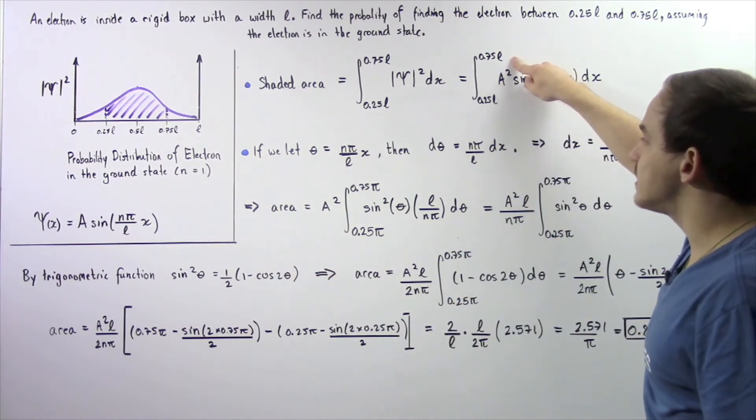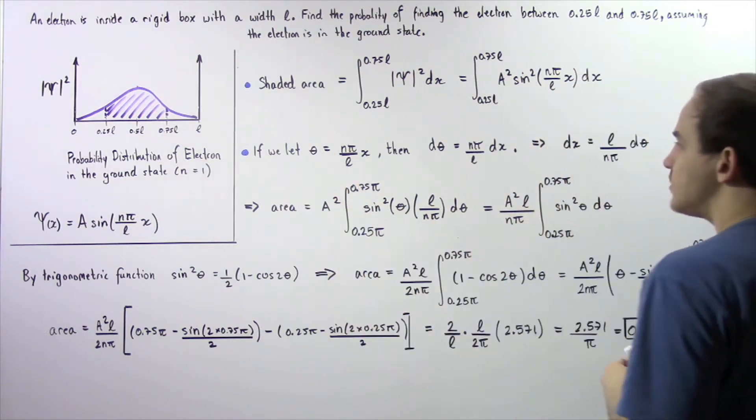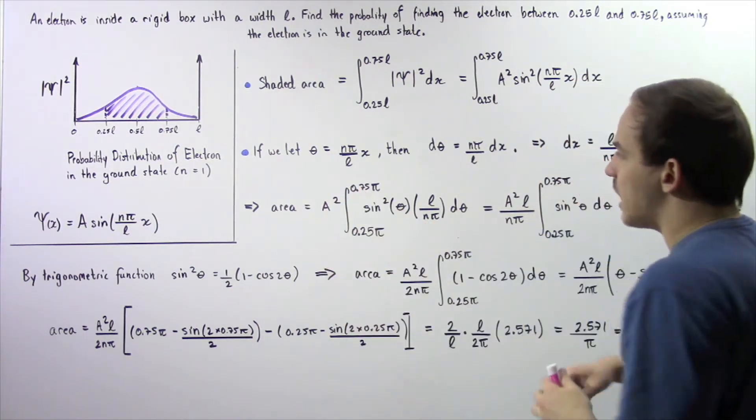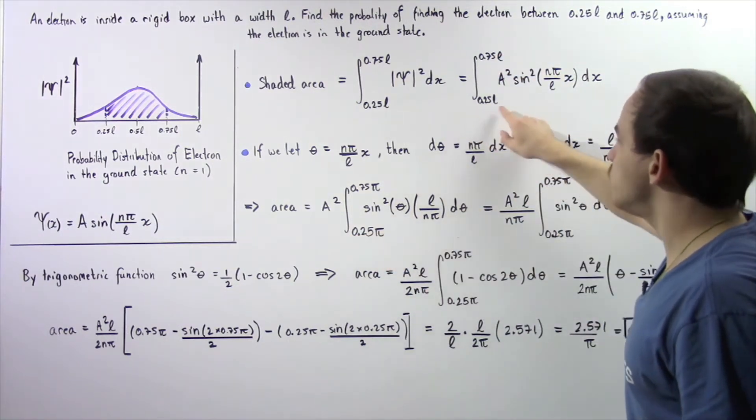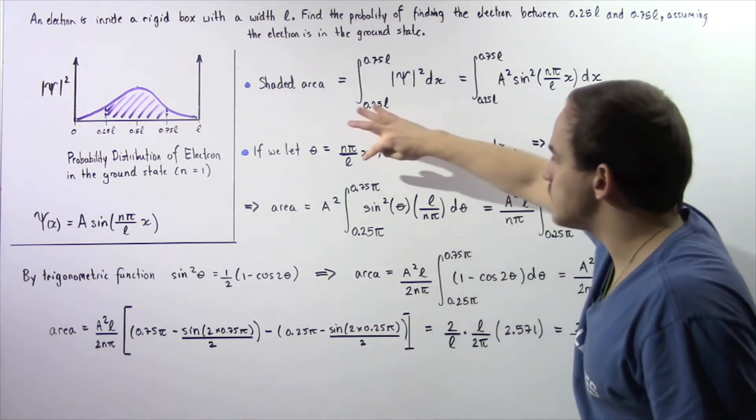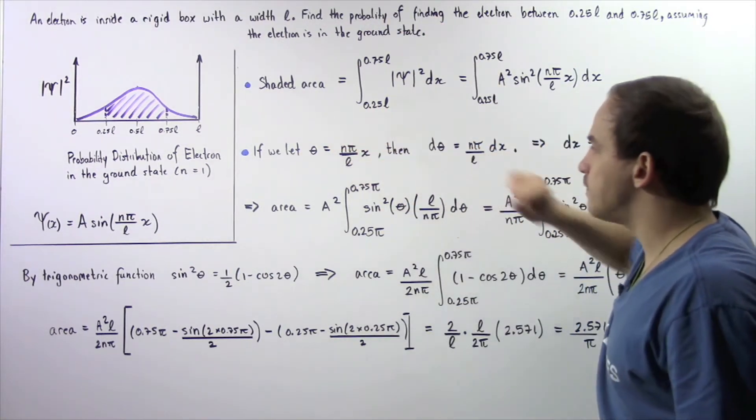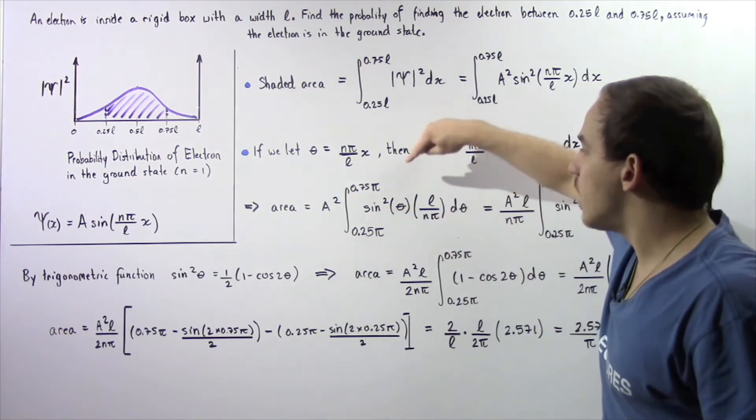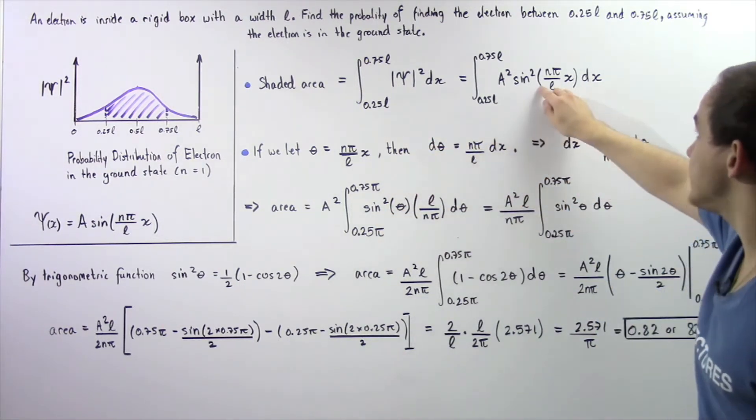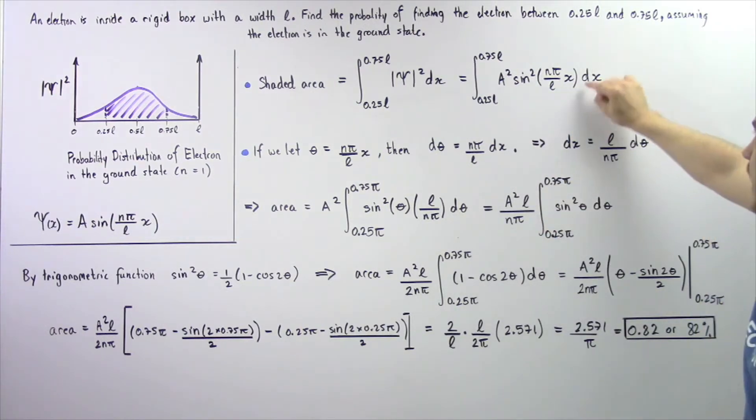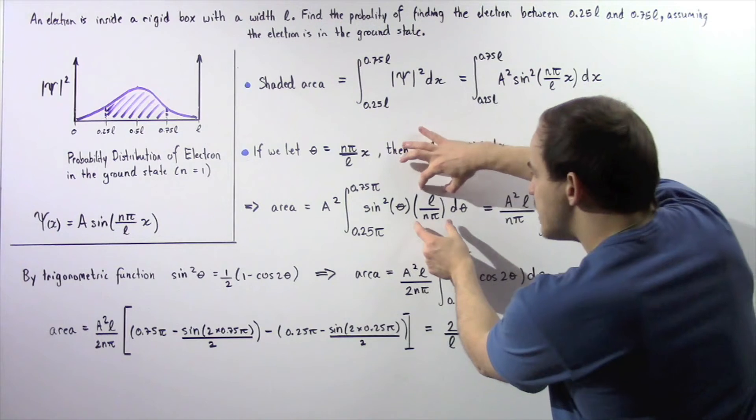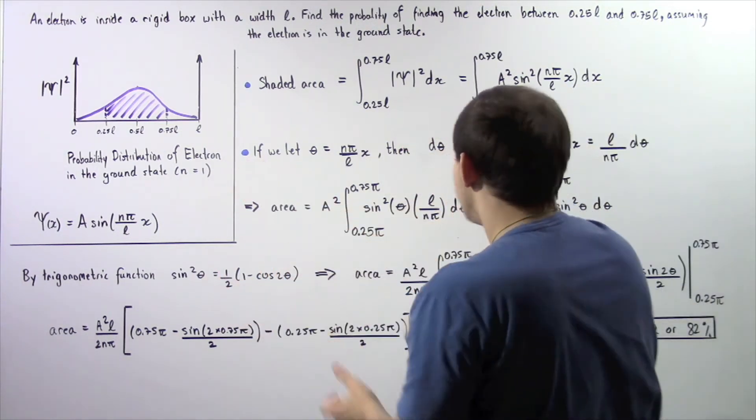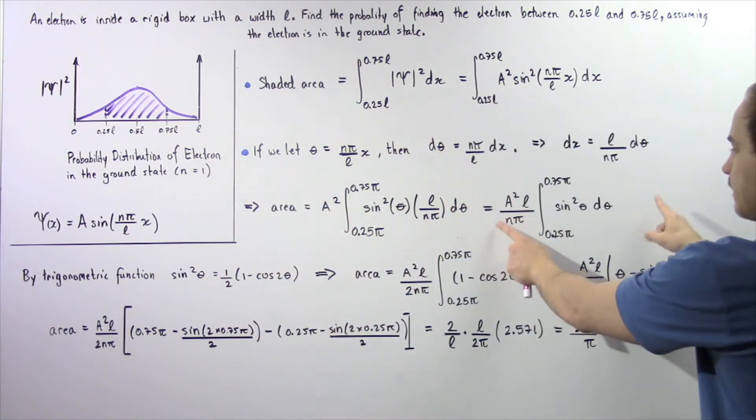A squared is a constant, we can bring that outside of our integral. So A squared multiplied by the integral, the lower boundary becomes 0.25π and the upper boundary becomes 0.75π. This becomes sine of our θ squared. We replace this inner portion with θ and replace dx with L/nπ multiplied by dθ. This is a constant, we can bring it outside of our integral and get the following result.